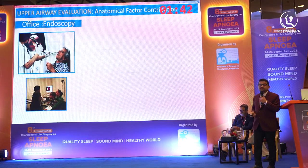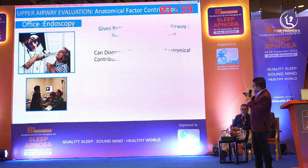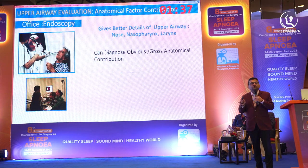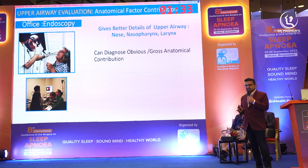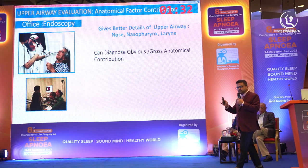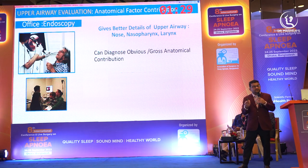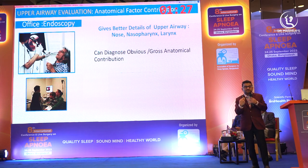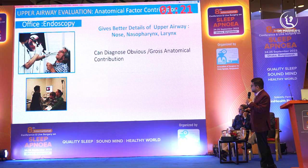After that comes office endoscopy. Office endoscopy is helpful for identifying static anatomical obstruction only — it will not show the dynamic obstruction that is happening. But it will roughly tell us about the nose, the tonsils, the tongue, or the larynx. It shows static obstruction, not dynamic.